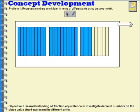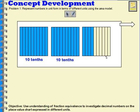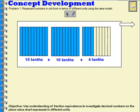Let's take a look at this group of area models. How many tenths are in one whole? If this is my whole area model, there are ten-tenths. So how many tenths are in this whole? Ten-tenths. How many tenths are in this one? One, two, three, four — so there are four tenths in that one. If I add these together, ten-tenths plus ten-tenths plus four tenths equals twenty-four tenths.